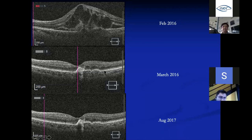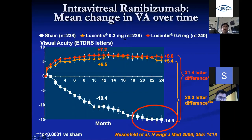With treatment — intravitreal injection — you can see restoration of RPE integrity, though it may no longer be perfectly regular and some areas become scar. You can achieve vision gain with timely injection; the average requirement is about seven to eight injections per year initially every month. Clinical trial data shows good visual gain, sustained over 24 months, with an average of five to six letters gained versus significant vision loss in untreated controls.